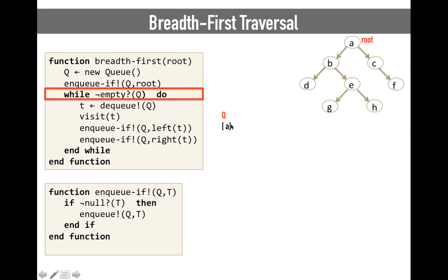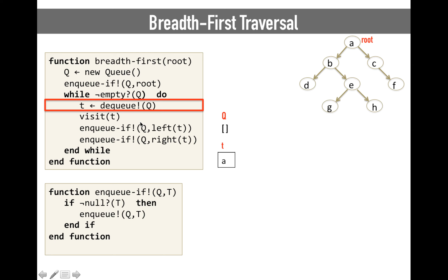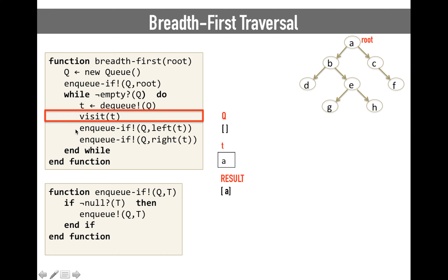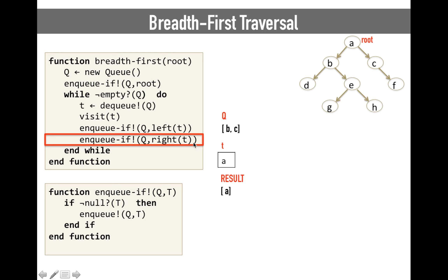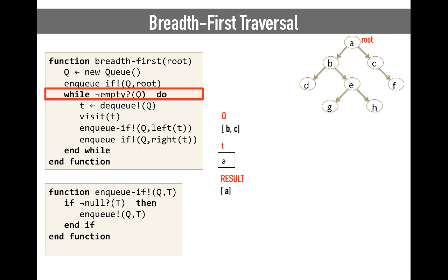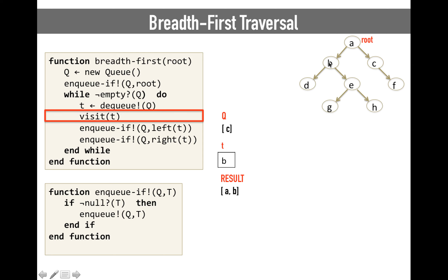Then we enter our loop. The queue is not empty, so we enter. We dequeue the first element, store it in T, and then we visit T. The function visit basically means you either print element T or store it somewhere to have the result. In this particular case, I'm going to put it in another queue called result — so every time we visit a node, we enqueue it in the result queue. So I'm enqueuing A here. And then I have to enqueue B and C, because these are the next nodes I should visit. So we enqueue B, we enqueue C, which is the right child of A.